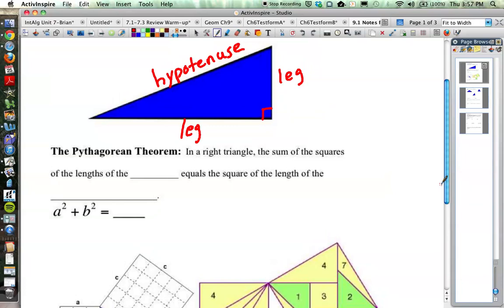Now, the Pythagorean Theorem is named after Pythagoras, one of the most famous mathematicians. He discovered that in a right triangle, the sum of the squares of the lengths of the legs equals the square of the length of the hypotenuse. We state that in an equation: a squared plus b squared equals c squared.